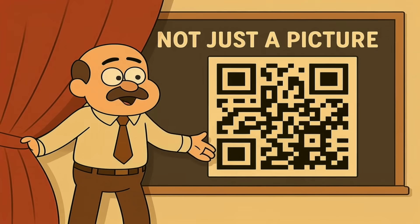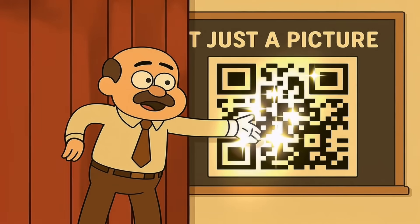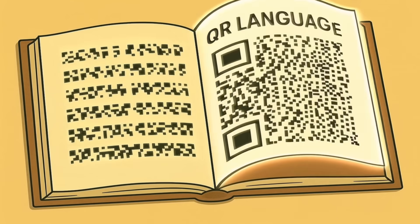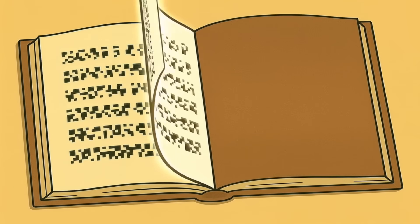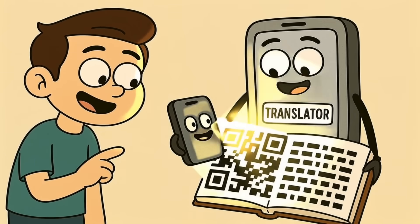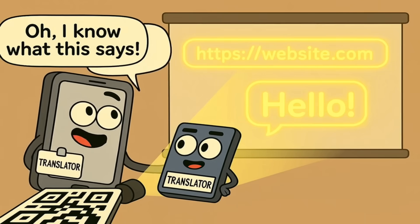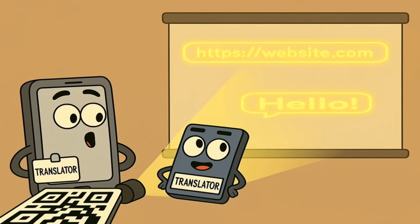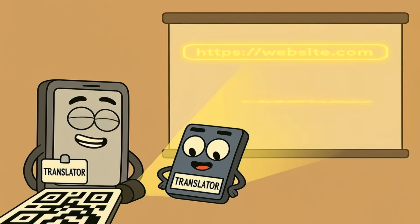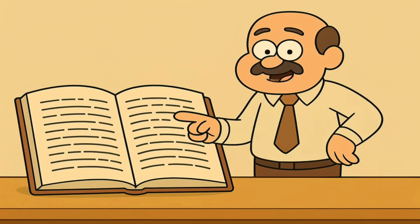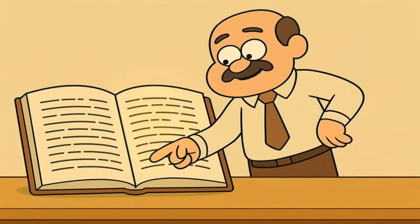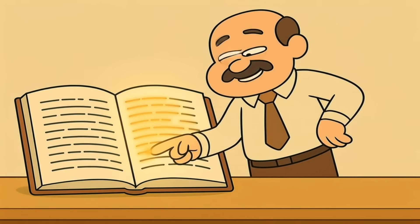Let's get the biggest secret out of the way first. That QR code isn't just a random picture — it's a language. It's a super nerdy, very organized language made entirely of little squares. Your phone's camera is not just taking a picture, it's acting as a translator. It looks at the square language and says, oh, I know what this says, and then shows you the message in a language you can understand, like a website link or some text. It's not magic — it's just a very clever way of writing information down so that a machine can read it super fast.